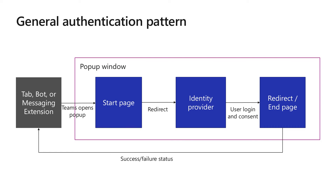The tab, bot, or messaging extension using the SDKs will tell the Teams platform to open a pop-up starting with a page that you own on your domain. That start page will then redirect to the identity provider — the authentication host that you're trying to have your user log into. Once that authentication is complete, that page will redirect to a page you own again with the same domain. This redirect or end page will use the SDK and notify Teams of a success or failure status, which will then give information back to your app.